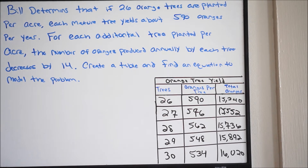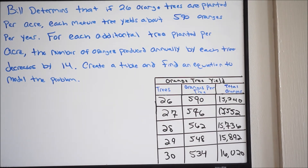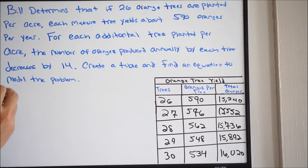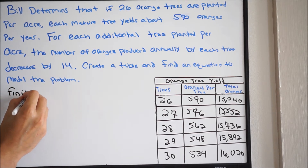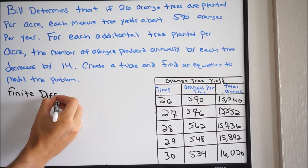This particular problem isn't as obvious in what we're dealing with. So we don't know if we're dealing with something linear. Is this going to be a quadratic? Is this going to be a cubic? It's not very obvious. Unlike the last problem where it was very obvious that we were dealing with a linear relationship. So in order to determine what type of relationship we're dealing with, we have to do something called finite differences.